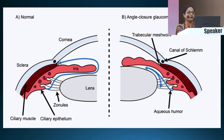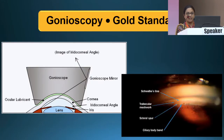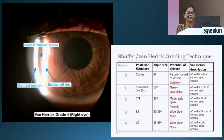This is a schematic diagram showing the normal aqueous flow from the ciliary body to the anterior chamber to the trabecular meshwork. When there is angle closure, there is a blockage and the aqueous cannot flow freely. As we all know, we can identify the angle only by gonioscopy, which is the gold standard. My next speaker is going to speak on it, so I am not going into details.